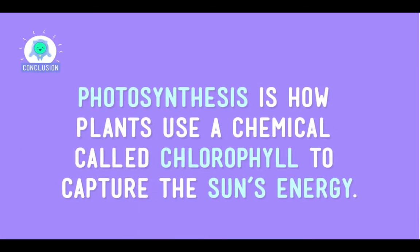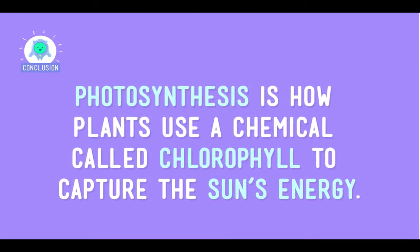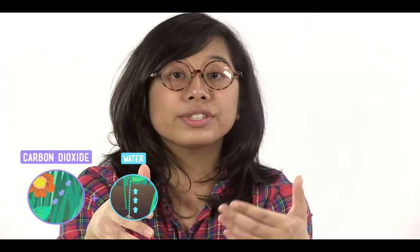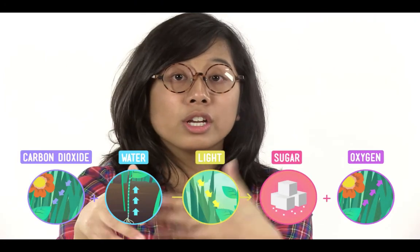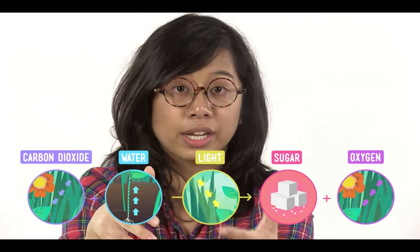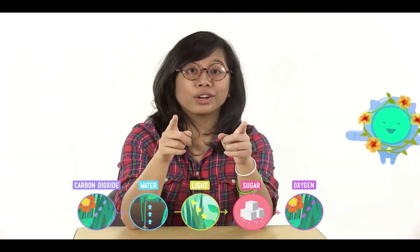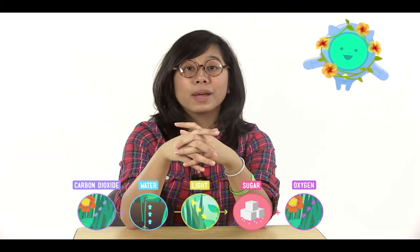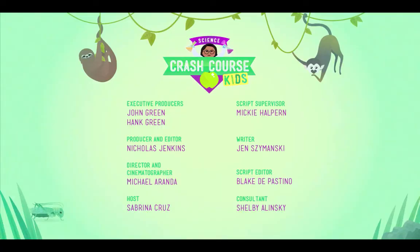So, photosynthesis is how plants use a chemical called chlorophyll to capture the sun's energy. They use this energy to change carbon dioxide and water to chemical energy in the form of sugar. This sugar, along with the oxygen that's released, is used by animals to survive. And that's a change we can all live with.